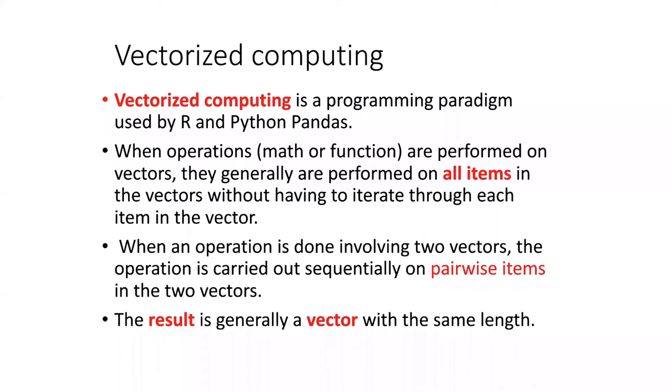What vectorized computing means is that whenever you perform some kind of operation, it might be a math operation or you could be putting the vector into a function. Whatever that operation is, it's performed on all of the items in the vector at once. You don't have to iterate through the items in the vector and say, do it to the first item, then do it to the second item, then do it to the third item. If you say perform this action on the vector, it just automatically gets done on all items in the vector.